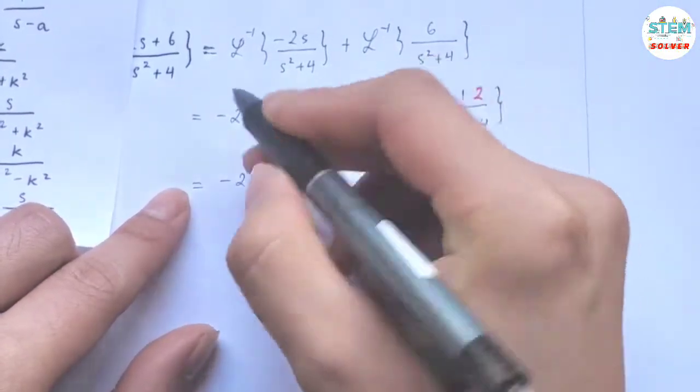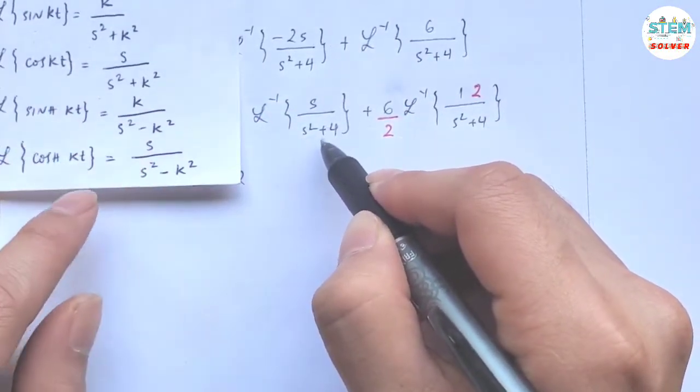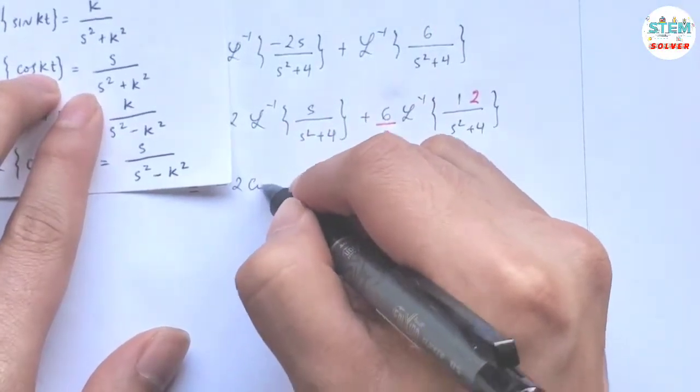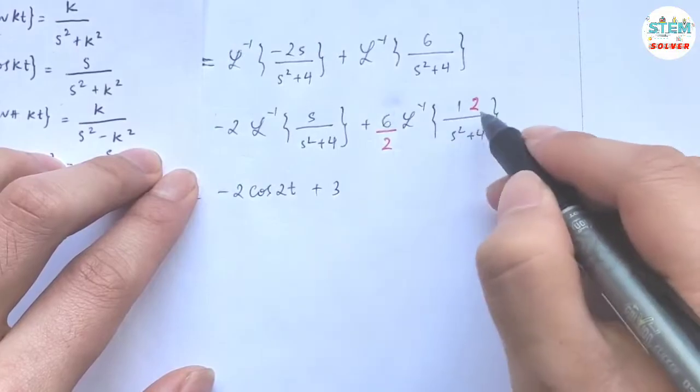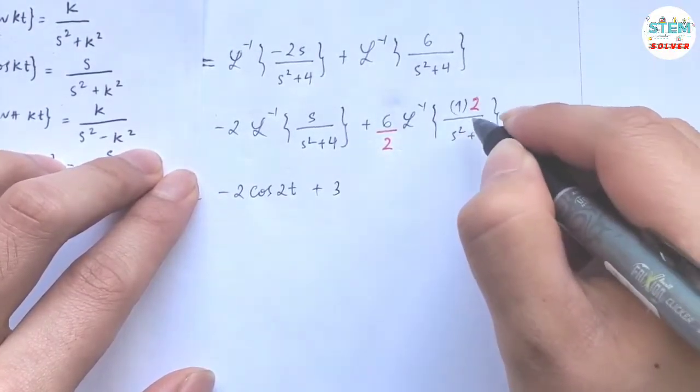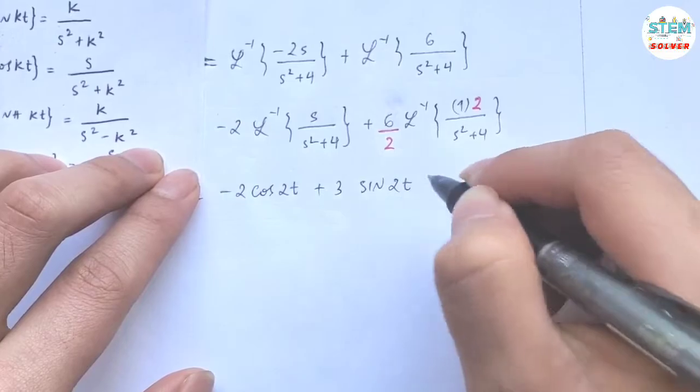Now for this one, we have negative 2 times L inverse of x over x squared plus 4, which is cosine 2t. Plus 6 over 2 is 3, and L inverse of this is sine 2t.